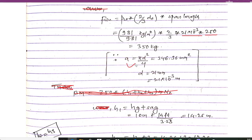The conductor diameter dc is obtained from the cross-section area using A = π d² / 4, where A = 346.36 mm². Solving gives d = 21 mm, i.e., 21 × 10⁻³ m. Substituting all values, we get Fwc = 350 kg for the 250-meter span.